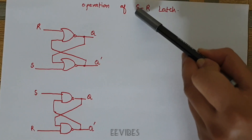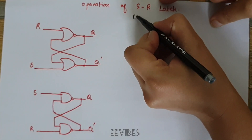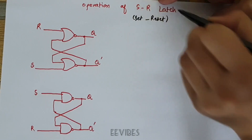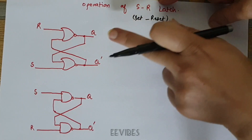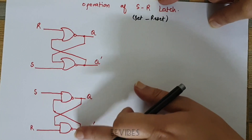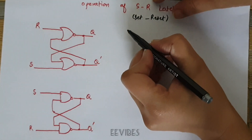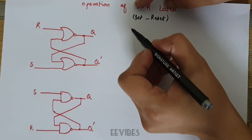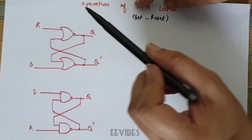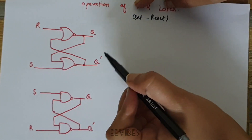Starting with the SR latch, where S and R stand for the set and reset inputs. There are two approaches for designing the SR latch: one is to use the NOR gate, and the other is to use the NAND gate. For understanding the operation of the SR latch, we will have two inputs — set and reset — and correspondingly two outputs, Q and Q-bar.